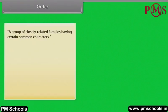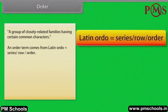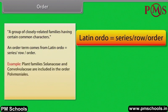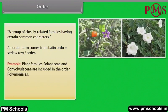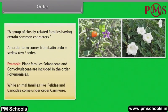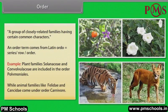An order is a group of closely related families having certain common characters. The order term comes from Latin 'ordo', meaning series, row, or order. For example, plant families Solanaceae and Convolvulaceae are included in the order Polemoniales, while animal families like Felidae and Canidae come under order Carnivora.